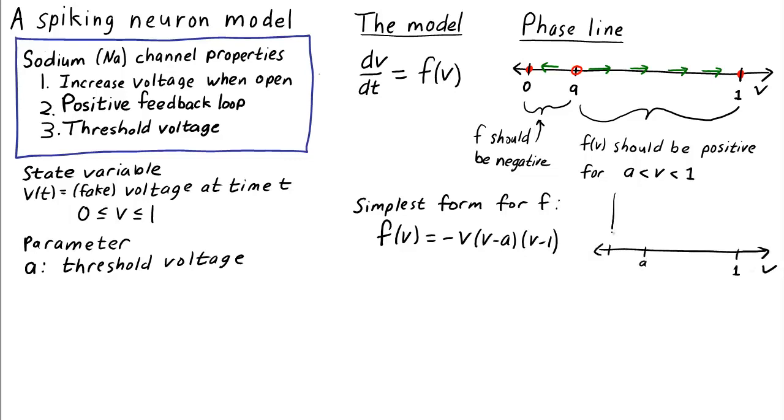F(V) equals negative V times (V minus A) times (V minus 1). In this case, the graph of the function F looks like this. With this function F, the differential equation is dV/dt equals negative V times (V minus A) times (V minus 1).